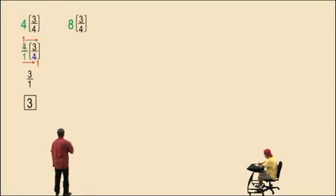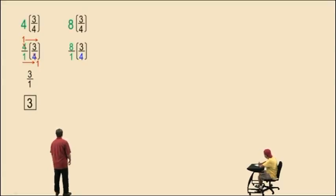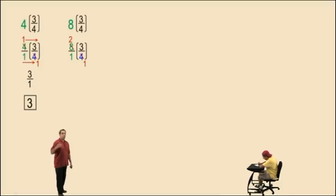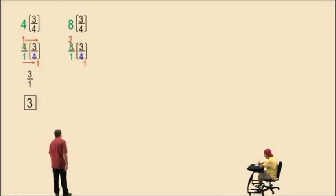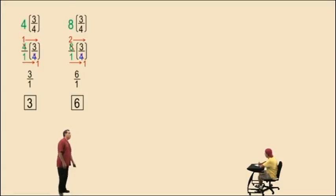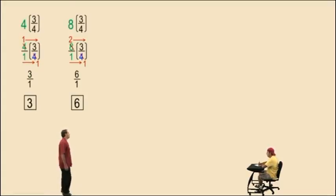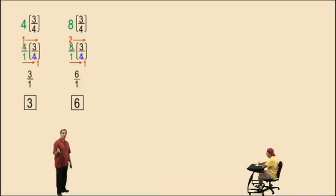Let's look at this one: eight times three-fourths. Let's write the eight as eight over one. And notice we can cross-cancel the eight and the four. Eight divided by four is two, and four divided by four is one. Notice we end up with a one in the denominator. When you multiply straight across the top and straight across the bottom, you end up with six over one, which is six — a whole number again. Notice eight was the whole number, four was the denominator, and eight divided by four was two.